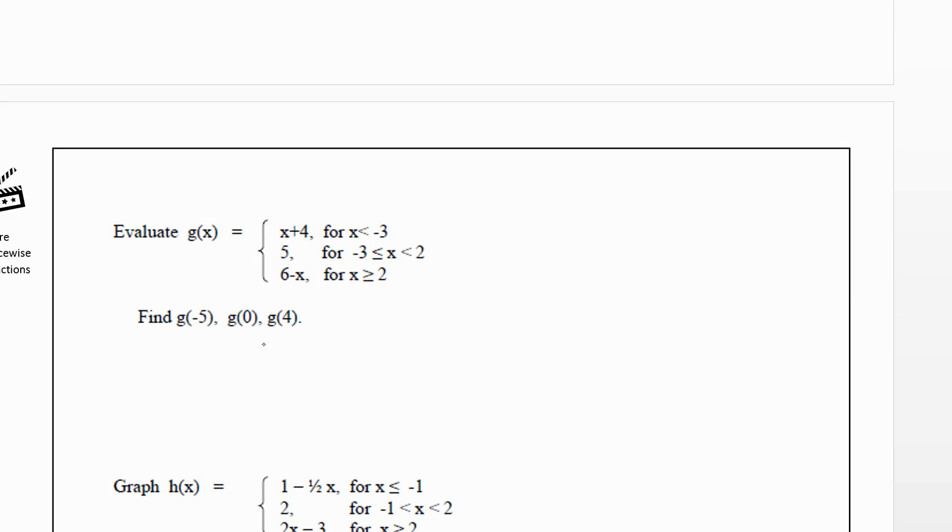We want to find g(-5), g(0), and g(4). We're going to look at the value we're plugging in and decide which of those pieces it fits into.